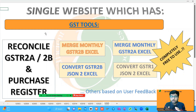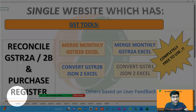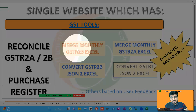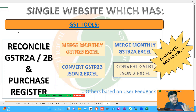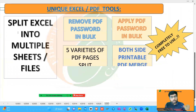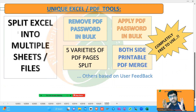The website has some very special tools which you will not find anywhere online. Some of the most crucial tools are: reconciling of 2A, 2B and purchase register, where you can upload your 2A or 2B and your purchase register and reconcile both of them. You can also merge monthly GSTR 2B Excel files, merge monthly 2A files, convert GSTR 2B to JSON, and convert GSTR-1 to JSON Excel file. These are the tools for GST practitioners, but if you work in a normal office dealing a lot with PDF and Excel, we have two very unique tools.